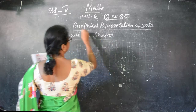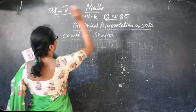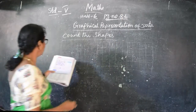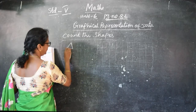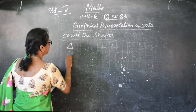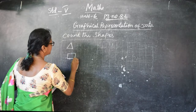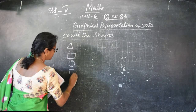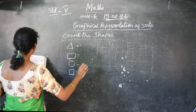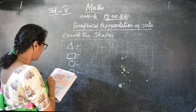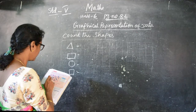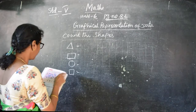Now I am giving the page number 86 - count the shapes. They are given triangle, then circle, sorry rectangle they asked, then circle and then the square. So you can count how many triangles, how many rectangles, how many circles and how many squares. I think how many triangles - 1, 2, 3, 4, 5, 6, 14 I think.